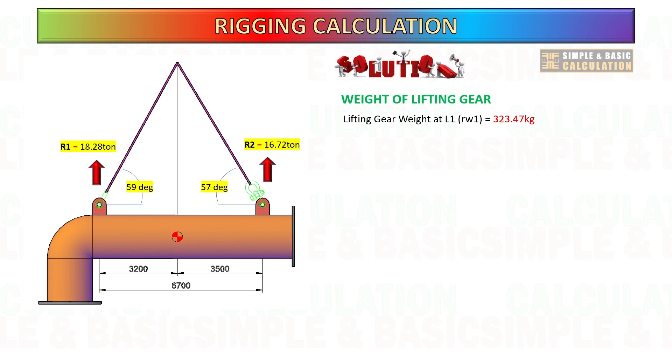Once you get all the values for sling angle and reaction forces in lifting points, start to calculate the wire sling tension based on these values. To get the sling tension, add the forces plus rigging weight and multiply by 1 over sin degree.